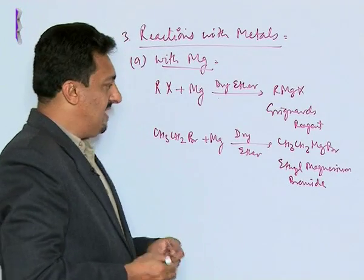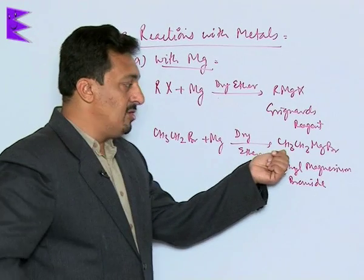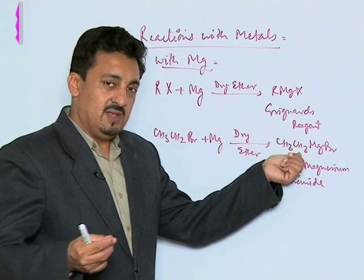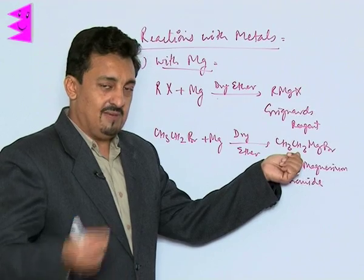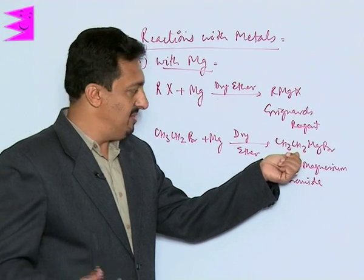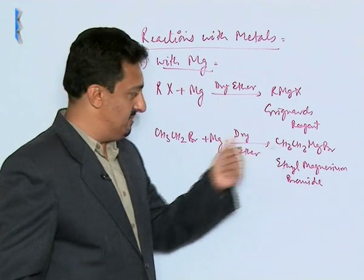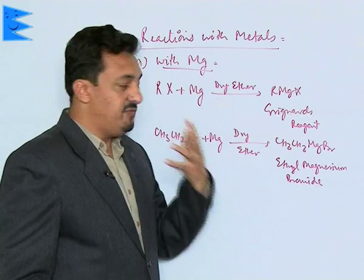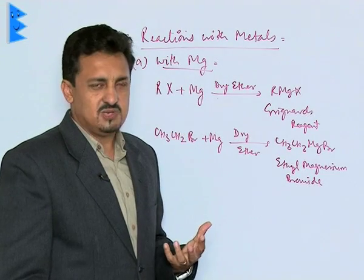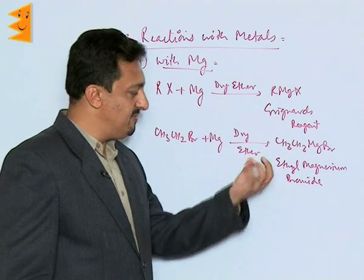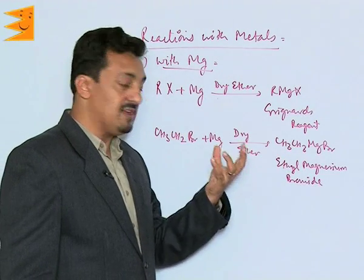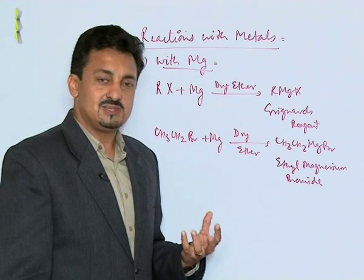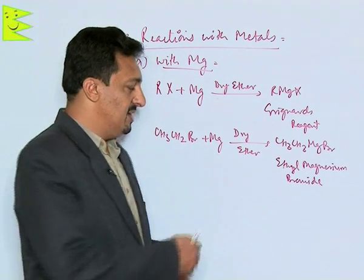Grignard's reagent is called an organometallic compound because it involves at least one carbon-metal sigma bond. These Grignard's reagents are a very important class of compounds because the carbon species comes out as a nucleophile.